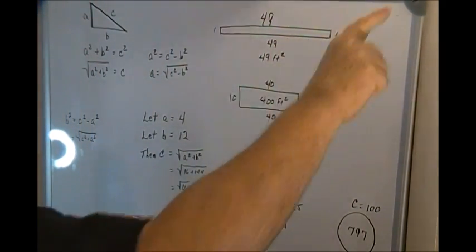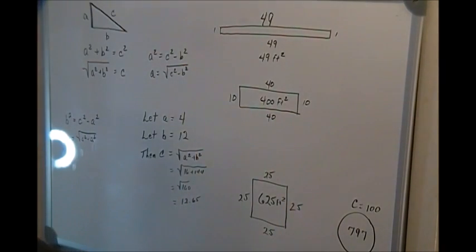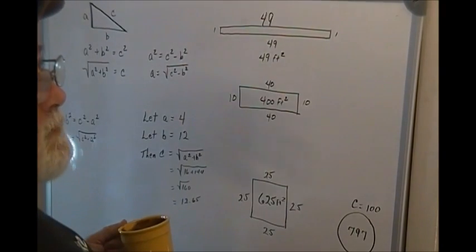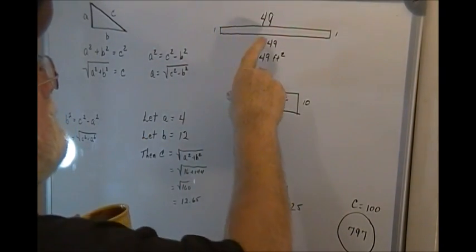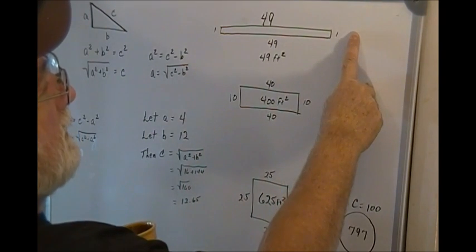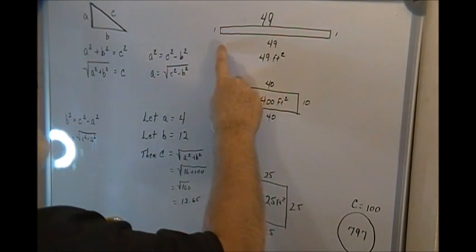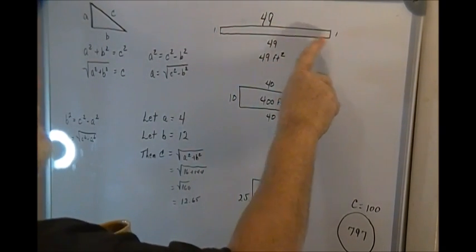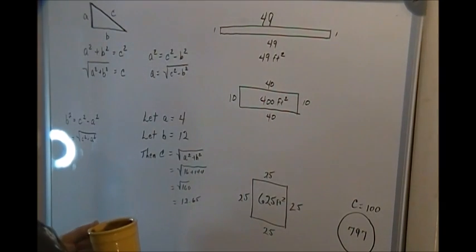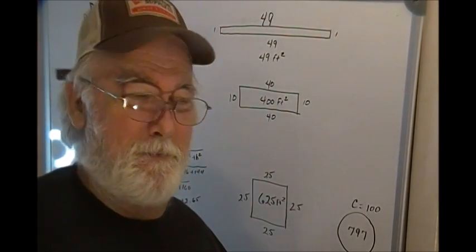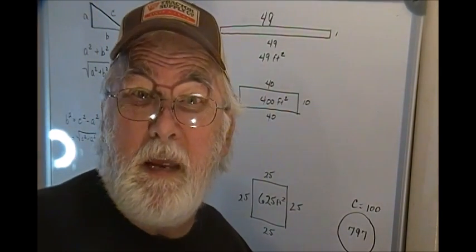You're going to enclose an area that you want to plant a garden in. And let's just say, just for the heck of it, you decided to make a garden 49 feet one way and one foot the next, and back 49 feet and back up one foot. You would only have a garden that would enclose 49 square feet. And you ain't going to grow much in there but spaghetti.